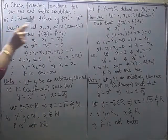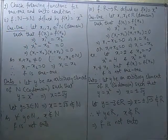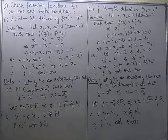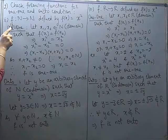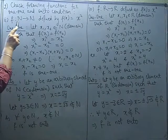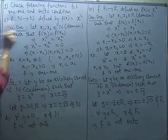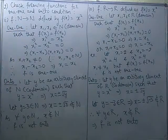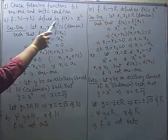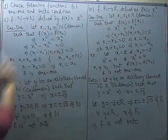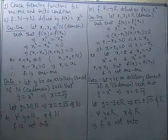The first and third parts are taken here so you can see the similarity and difference in both questions. The first part is a function from the set of natural numbers to the set of natural numbers, defined by f(x) = x square.